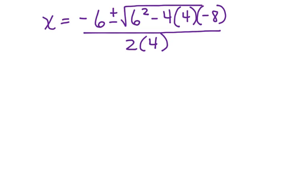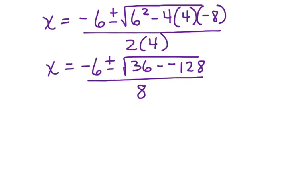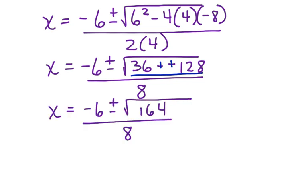We have x equals negative 6 plus and minus the square root of 6 squared minus 4 times 4 times negative 8 divided by 2 times 4. Let's multiply and combine what we can, and then look at solving to our next step. Here we have negative 6 plus and minus the square root of 36 minus a negative 128 divided by 8. We have a double negative here. We can make that a positive, and now we can combine again right here. Negative 6 plus or minus the square root of 164 divided by 8.